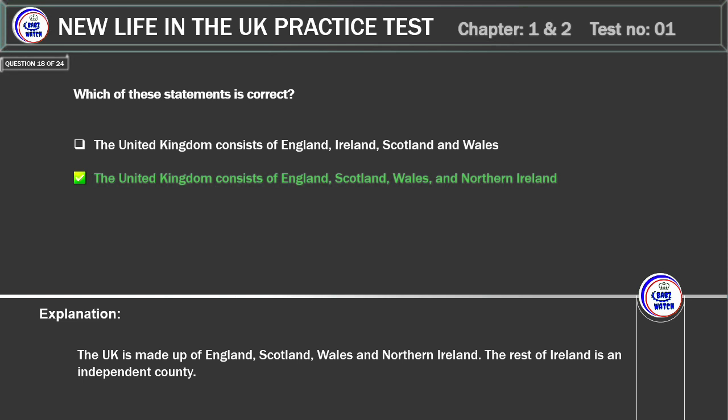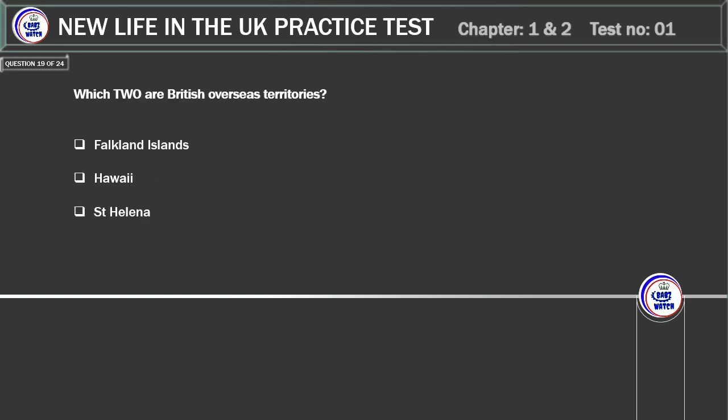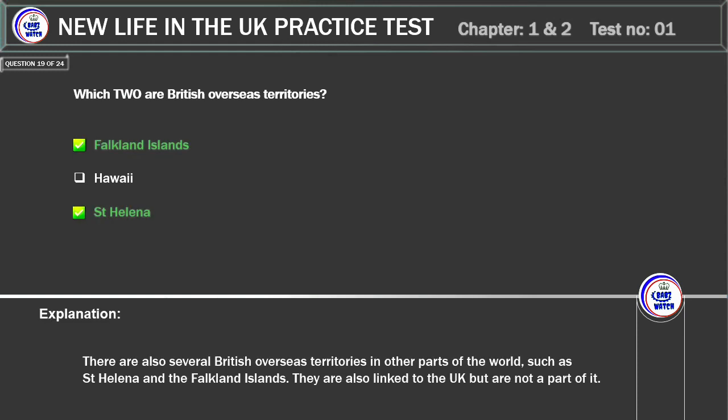The rest of Ireland is an independent country. Which two are British overseas territories? Falkland Islands. Hawaii. St. Helena. Correct answer: Falkland Islands and St. Helena. Explanation: there are also several British overseas territories in other parts of the world, such as St. Helena and the Falkland Islands. They are linked to the UK but are not a part of it.